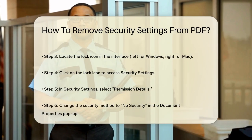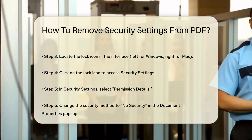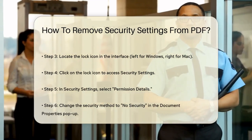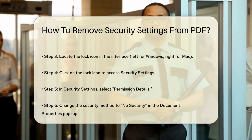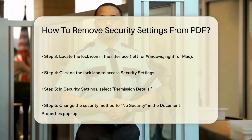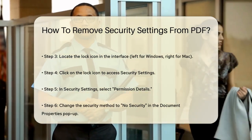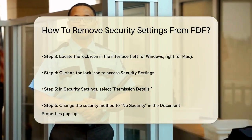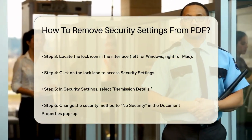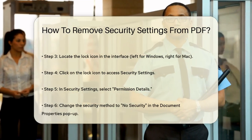Click on this icon to open the security settings. In the security settings, click on Permission Details. A pop-up will appear titled Document Properties. Under the Security section, click the drop-down menu for the security method and select No Security. Verify that you want to remove the password protection. Once you've done this, the security method will now state No Security and you can save the PDF without any restrictions.